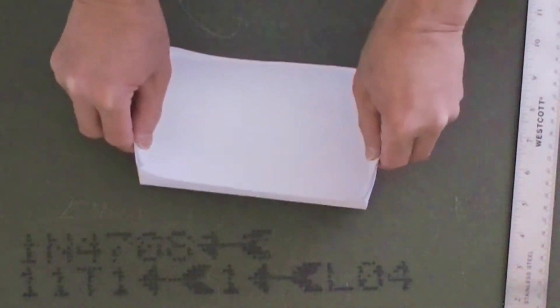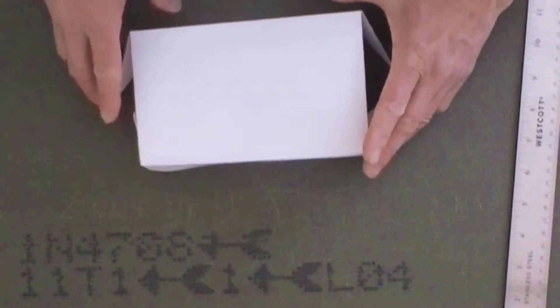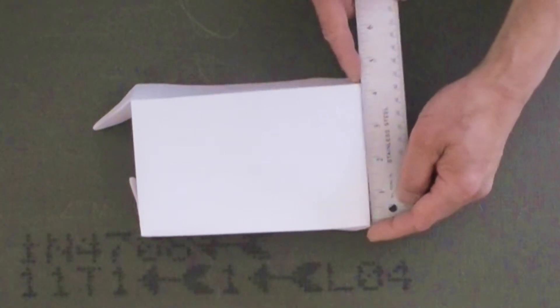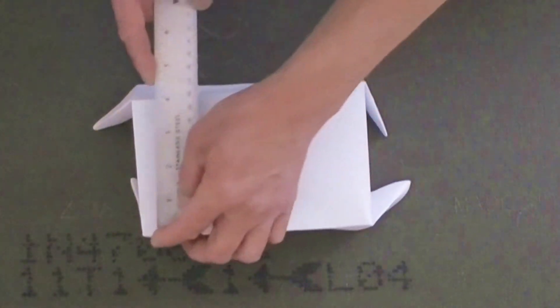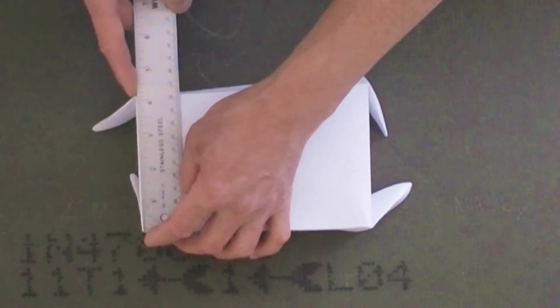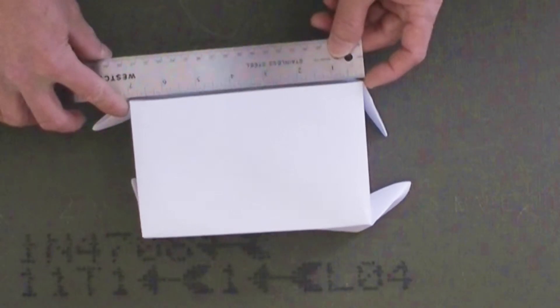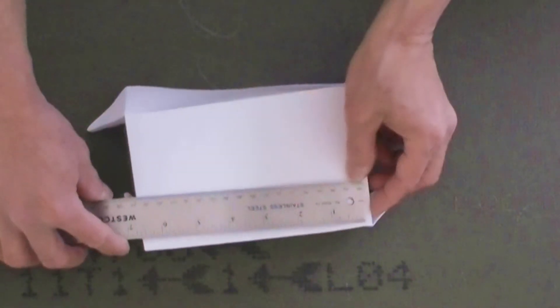With the lengthwise measurements, I suggest always to start off from the same end. As you can see, I didn't get the rectangle I wanted after I folded the paper.